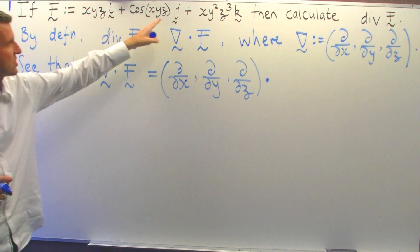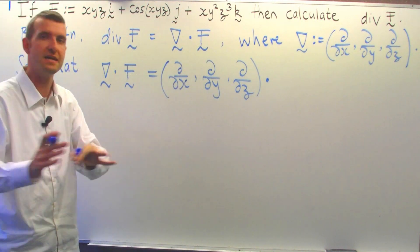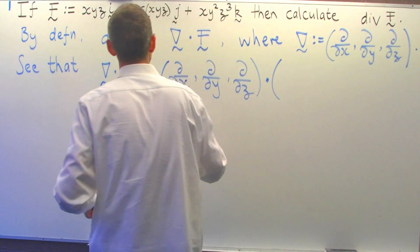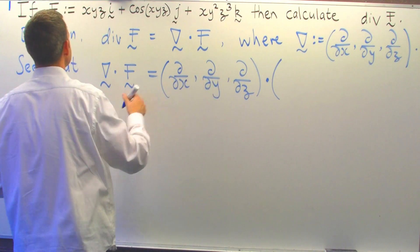Now, instead of using i's, j's and k's, I'm just going to write it out as an ordered triple. If you want to use i's, j's and k's, you can, but you should put them in here as well.